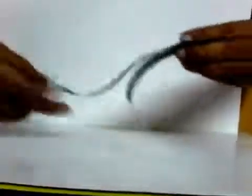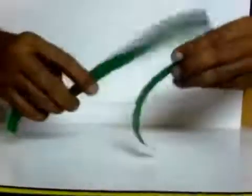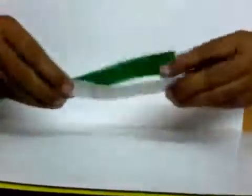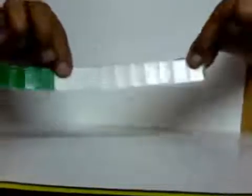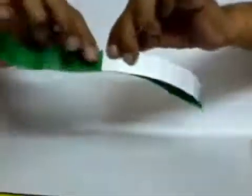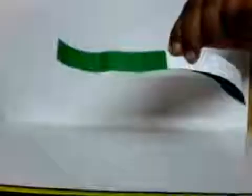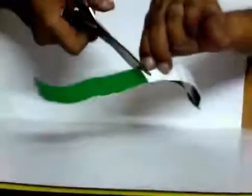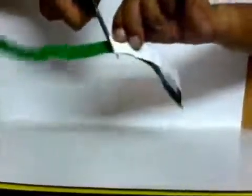Now, place one strip over the other like this. You find here this part is projecting out. Now, you take a pair of scissors and cut that part. There you are. Now, discard one of these pieces.